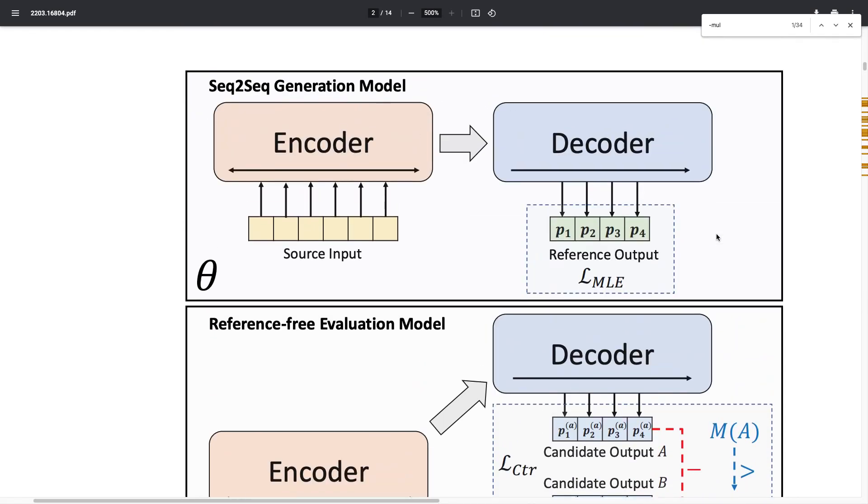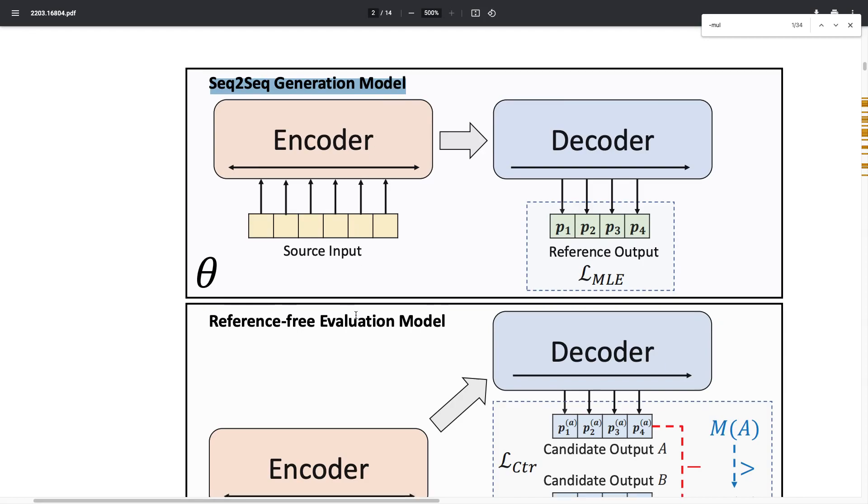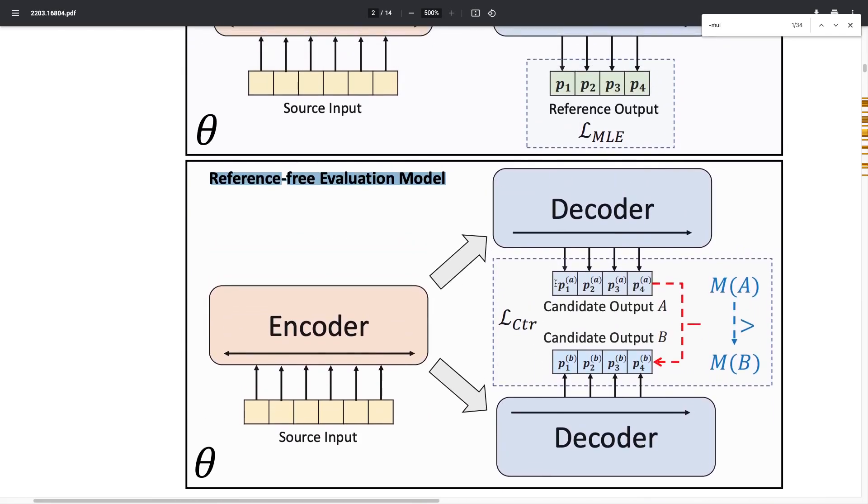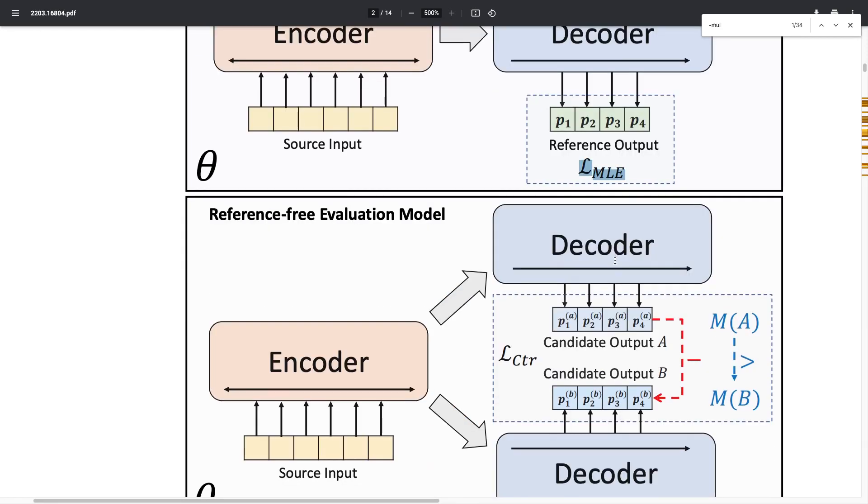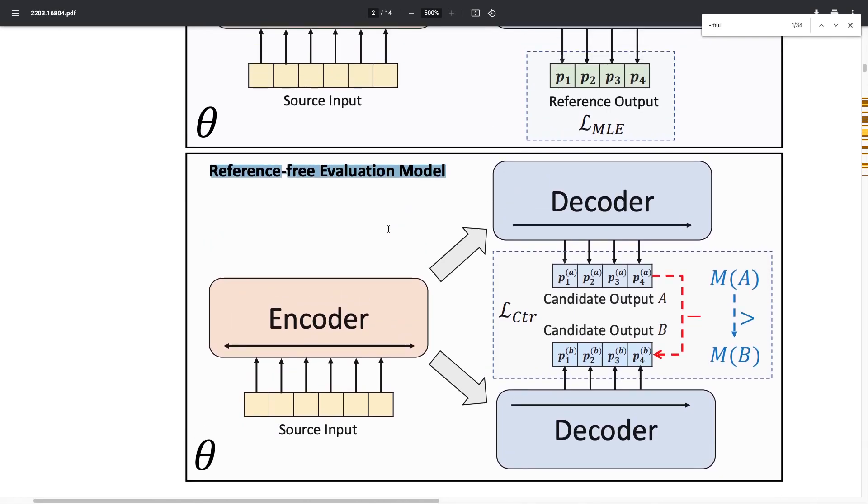The authors compare three types of models. The first is the standard sequence-to-sequence generation model trained using MLE. A typical model used in the paper is BART, which has been pre-trained on many documents and fine-tuned on a summarization dataset. The second model uses the new paradigm, generating multiple summaries and computing an overall score. The third model is trained jointly using both MLE and this reference-free evaluation approach, using a linear interpolation of the two loss functions L_MLE and L_CTR.